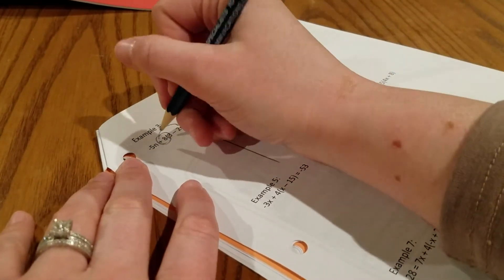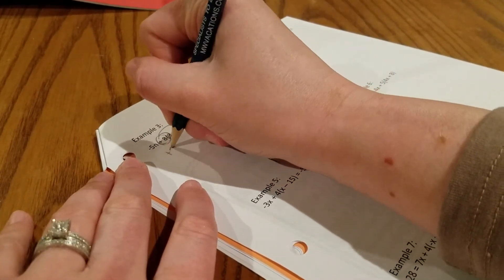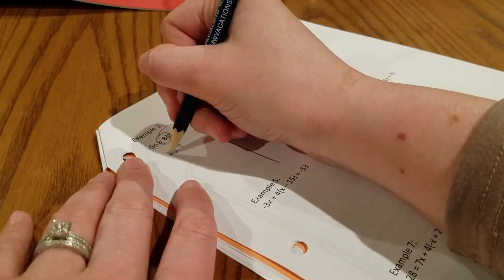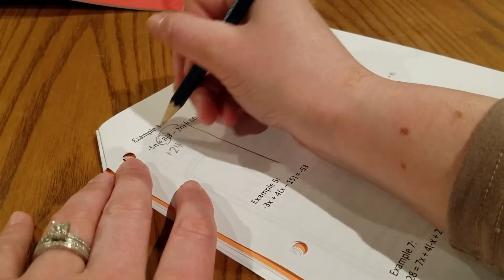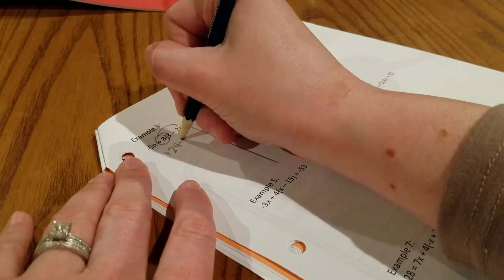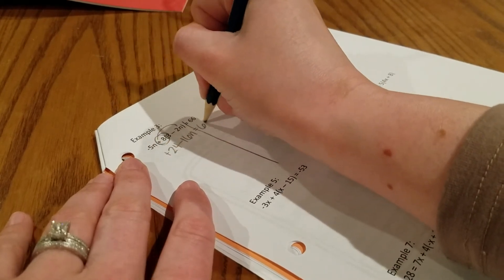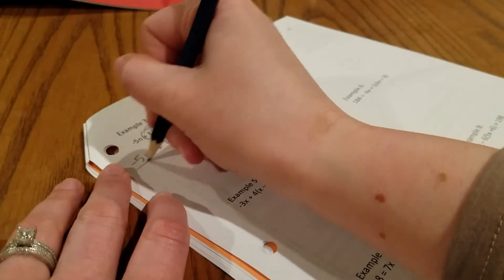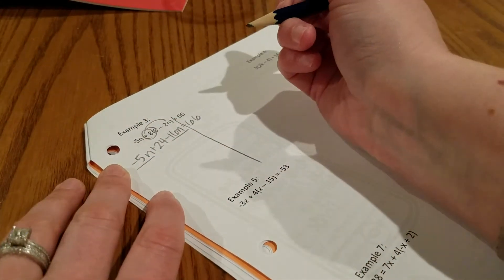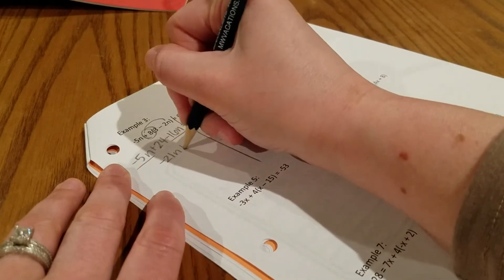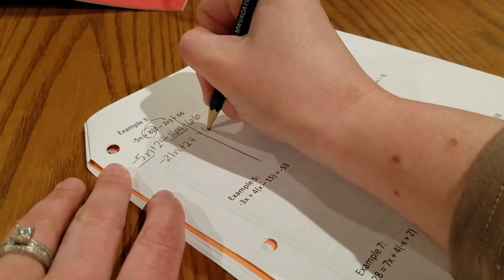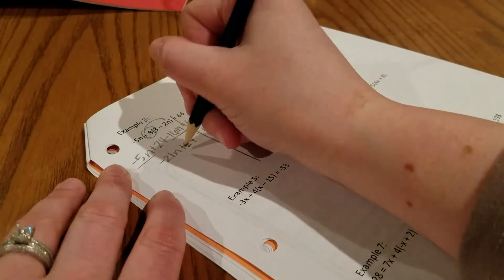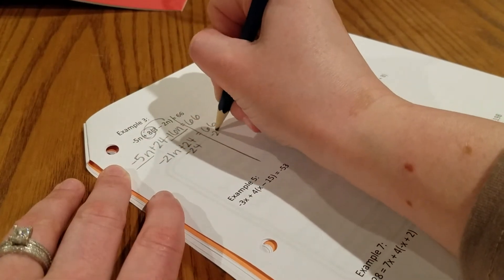Positive 8 gets distributed here. So 8 times 3 is positive 24. I'm putting that because I know I have something out front. Positive 8 times negative 2n is negative 16n. Don't forget to bring down the negative 5n who is chilling. So I have negative 5n and negative 16n, which gives me negative 21n plus 24 equals 66. Minus the 24 from both sides.